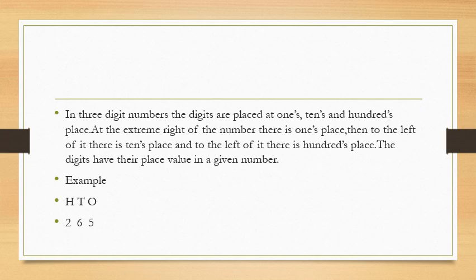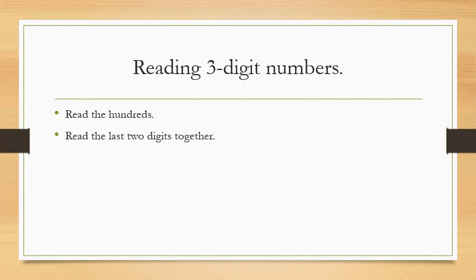Children, look at the example. Here, 265 is a three-digit number. You will see that three digits are placed at ones, tens, and hundreds place. Five is at ones place, six is at tens place, and two is at hundreds place. So 265 is a three-digit number.